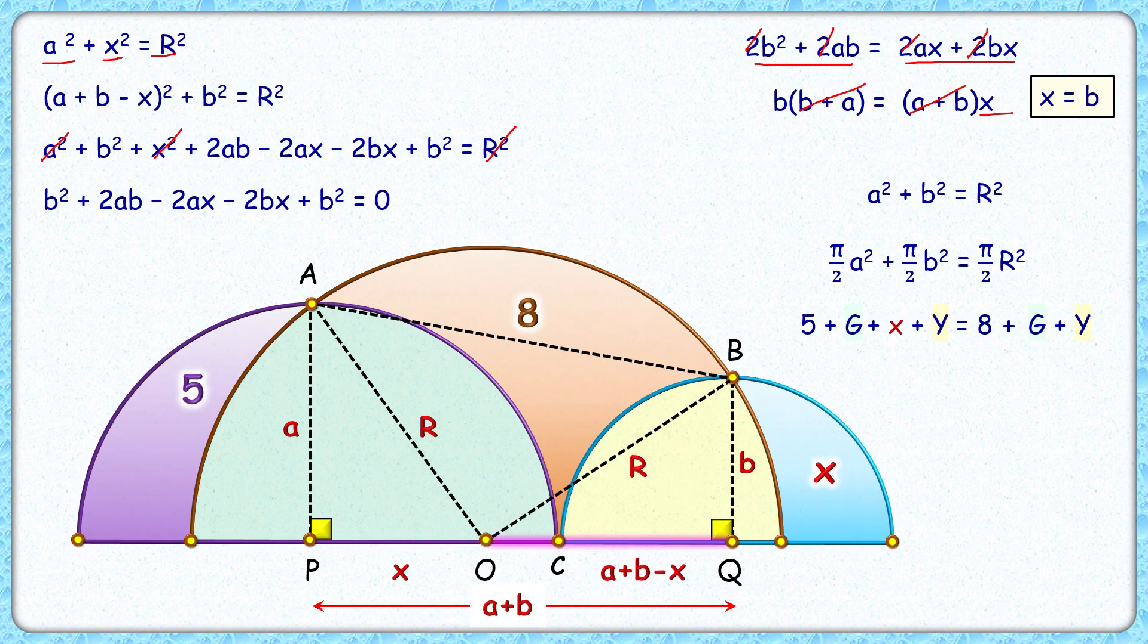Now solving it, this green and yellow area will get cancelled on both sides. We'll get 5 plus X equals 8, or X is 3 square centimeters, and that's our answer. I hope you enjoyed the solution. I will see you in the next video. Till then, tata, bye bye!